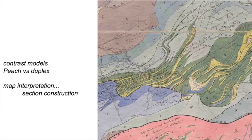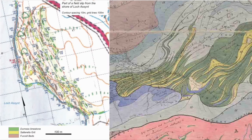Here's a geological map — it's part of the series produced by Ben Peach and his colleagues in the latter part of the 19th century. You can see on the map that zebra-like pattern which represents repetitions of the green and yellow coloured rocks. This is a map pattern indicative of imbricate thrusting. We're going to illustrate the interpretation of these types of regions on cross sections, but we'll use one of my own field slips from further north in the Moine thrust belt, on the shores of Loch Assynt.